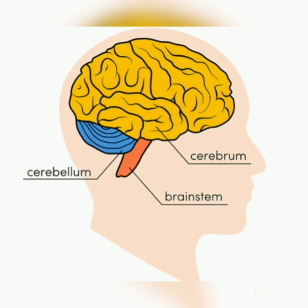Next we have the brain stem, also called medulla oblongata. This brain stem joins the brain with the spinal cord, and it lies just below the cerebrum. It controls involuntary activities like heartbeat, respiration, circulation, and digestion.